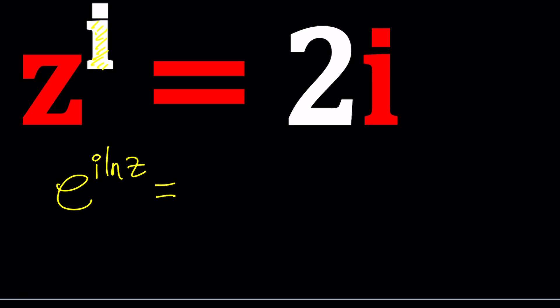And the right-hand side is 2I, but I can also write it in polar form. 2 is the modulus. I tells me that angle should be pi over 2. But I should be allowed to add multiples of 2 pi. So let's go ahead and add 2 pi N and then multiply by the whole thing.